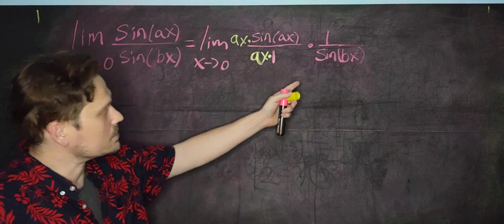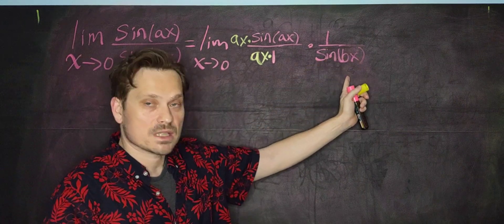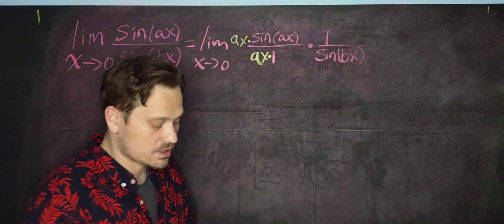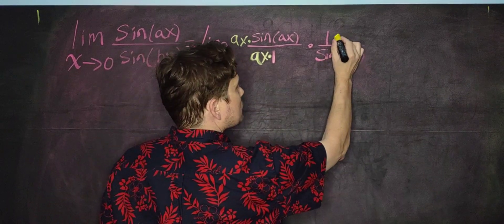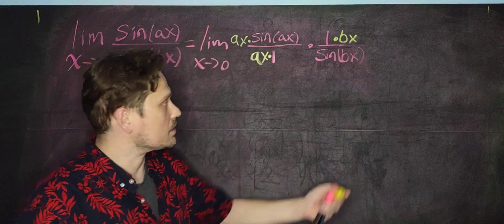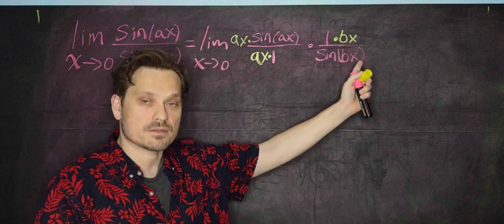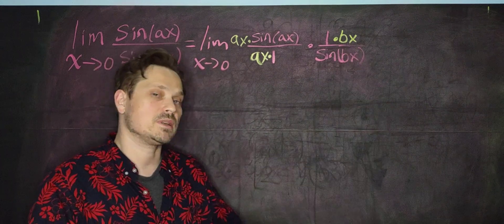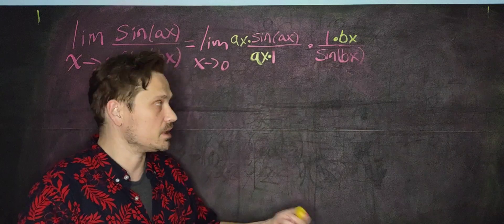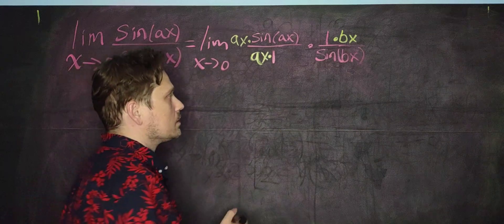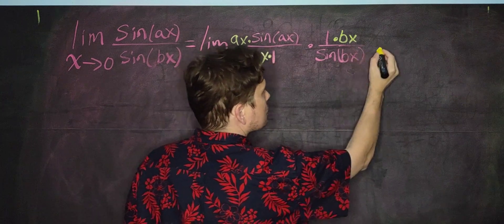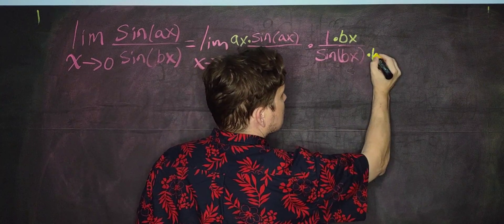The same thing applies to the 1 over sine bx piece. I would like to have bx in the numerator there, so I multiply by bx on top. But again, I cannot arbitrarily change part of a fraction — when you rewrite fractions you must multiply top and bottom by the same thing. So I also multiply sine bx by bx on the bottom.